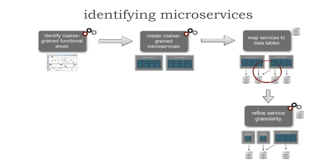However, notice that right-hand service from step three to four. I was not able to find that clear seam. That right-hand service does A, B, and C, but the problem is all three of those functions require the same groupings of data. Consequently, I was not able to split up that service. This demonstrates how data does, in fact, influence the granularity of your microservice.